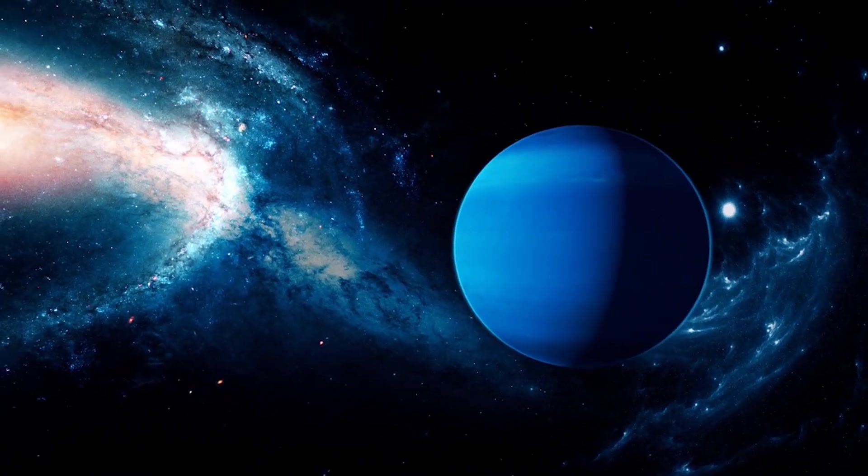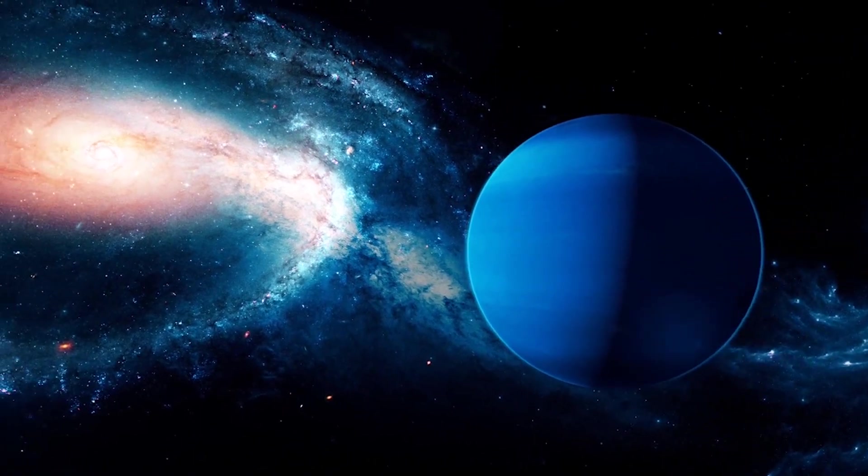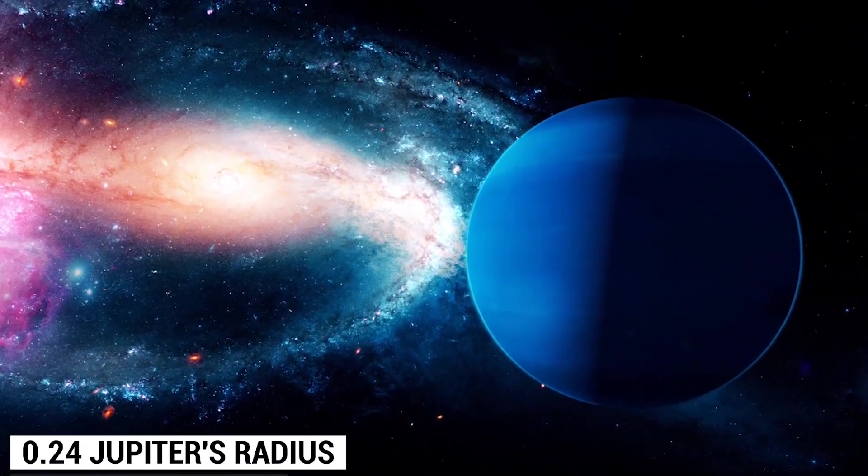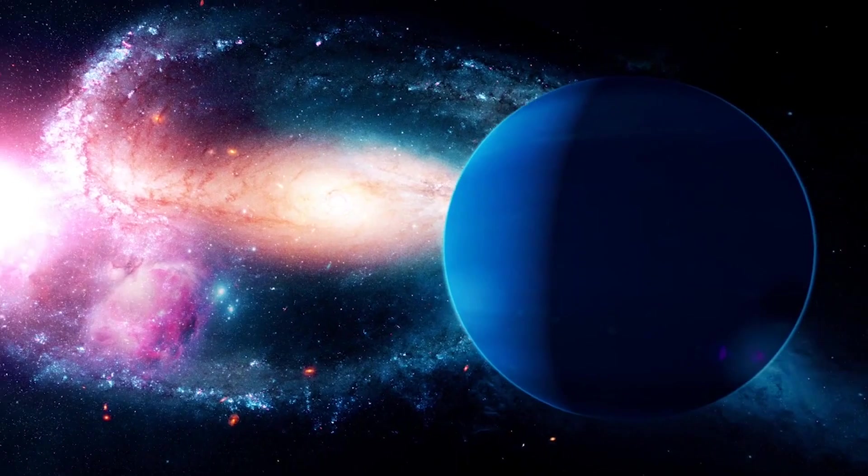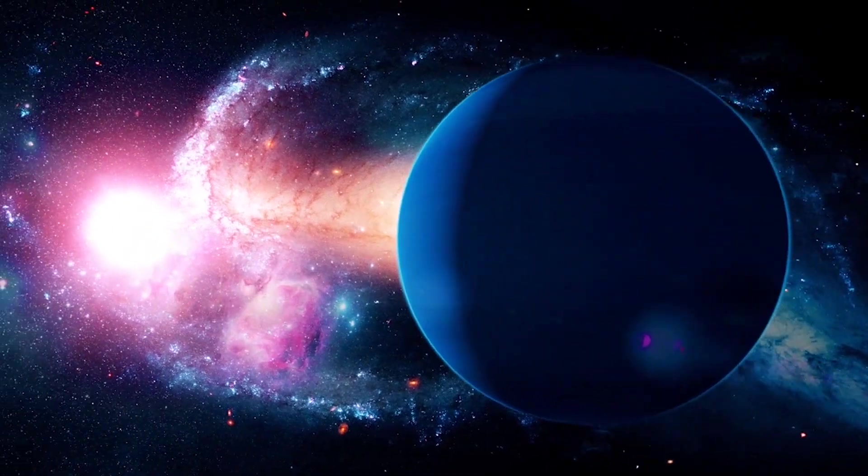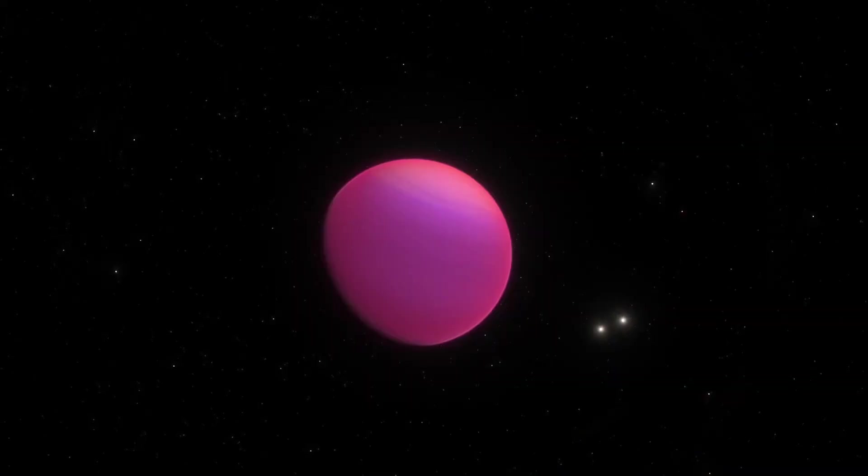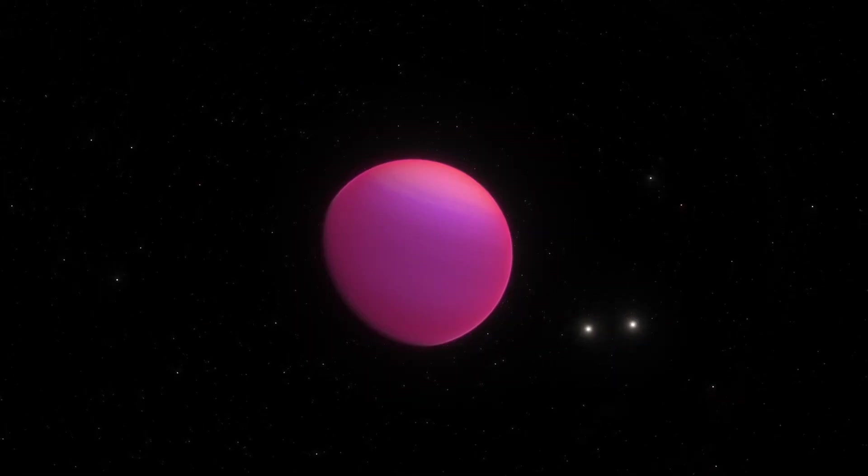A Neptune-like exoplanet, or water world, has 8 Earth's mass and 0.24 Jupiter's radius. Despite its oceans, this strange world still has no earthly sister. It has no hard surfaces and a different atmosphere than Earth.